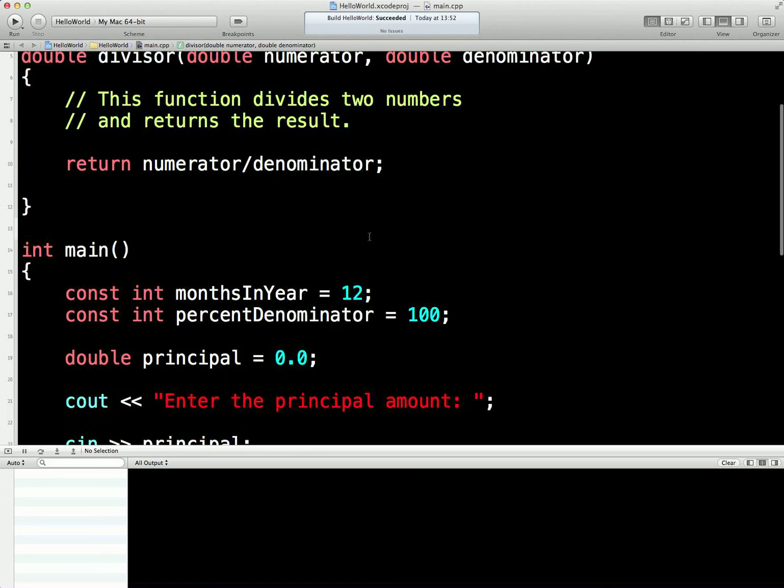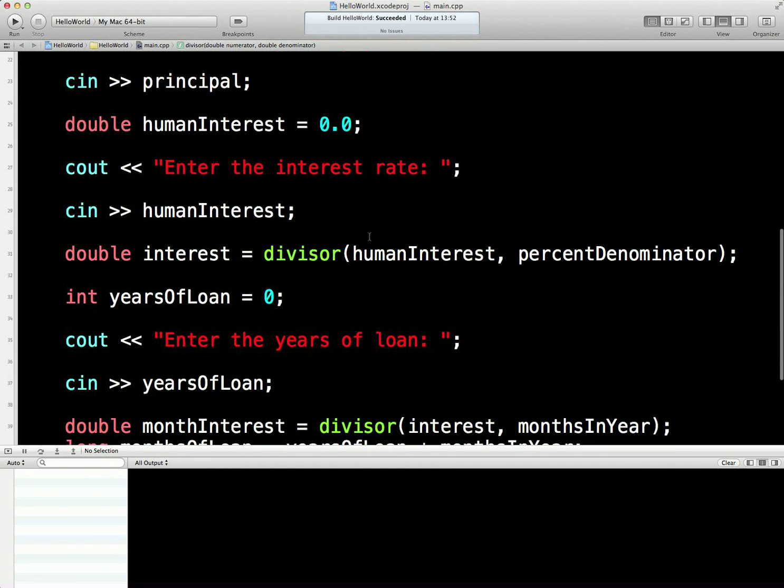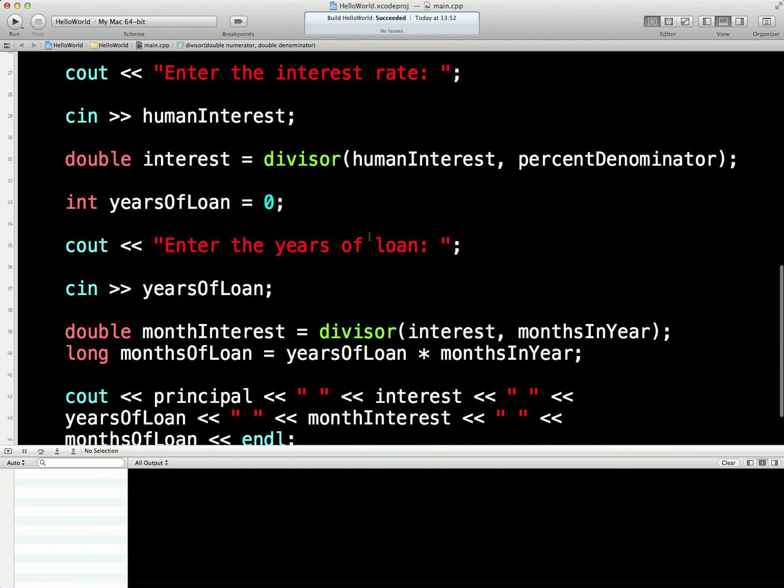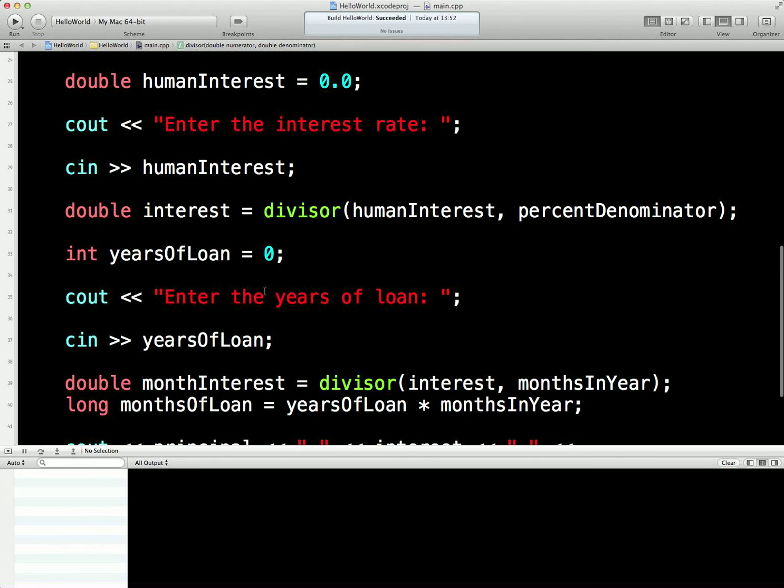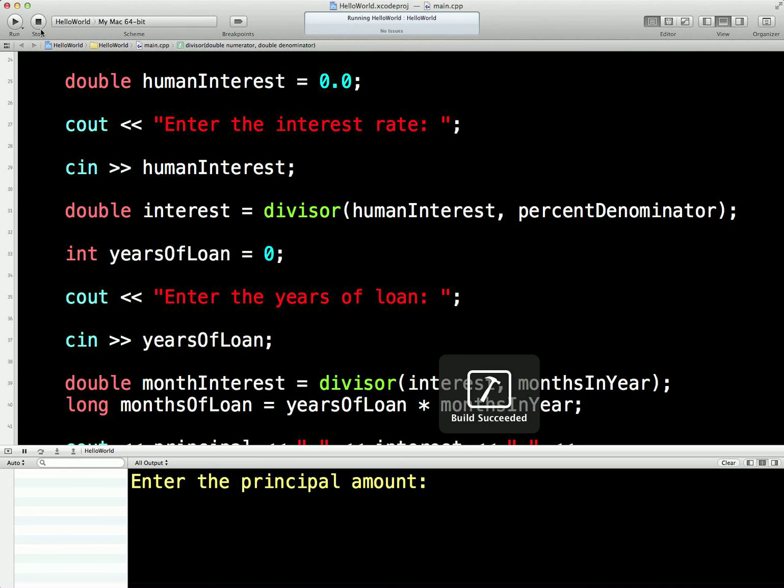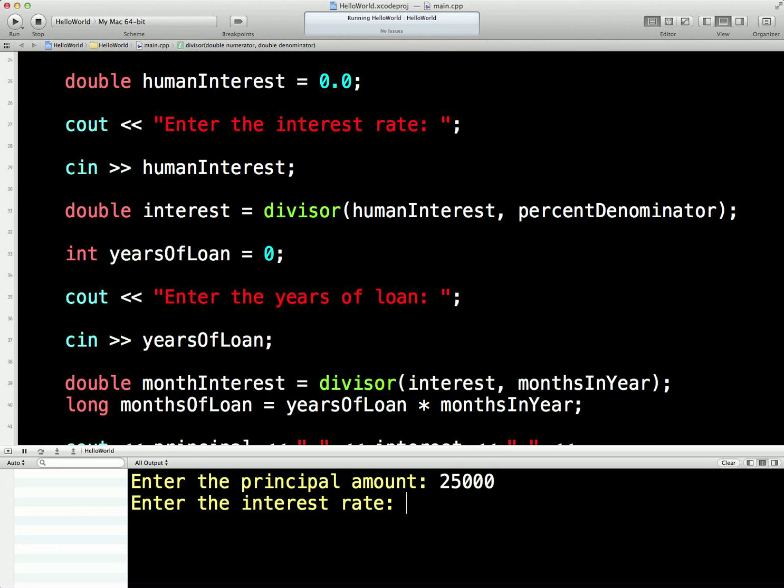So now what I'm going to do is just test this. Let's have a quick run. Execute. Enter the principal amount, 25,000. Enter the interest rate, 17%. Enter the years, 30. And brilliant. It's divided it to a mathematical interest rate rather than a human interest rate. That's fantastic. I'm nearly done there.